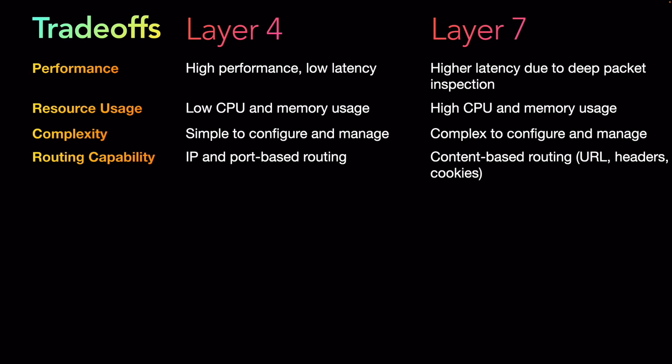For routing capability, Layer 4 uses IP and port-based routing, while Layer 7 uses content-based routing — considering URLs, headers, cookies, and message data. For example, if you want to route a request to a load balancer deployed in Spain, Layer 7 can inspect the message content to determine where the request originates or where it needs to go, such as in tenant-based routing scenarios. Layer 4 simply detects based on IP and port.